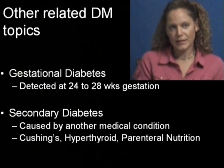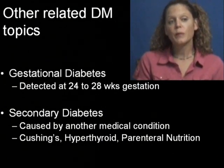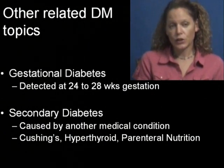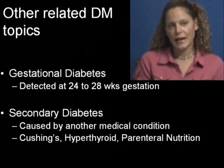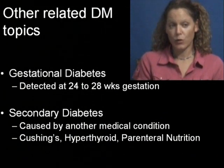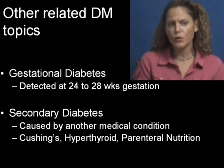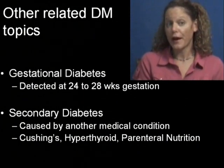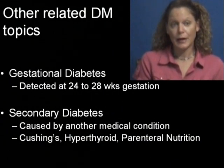Other topics related to diabetes mellitus that we will not discuss in detail here, but that you may want to research on your own, include gestational diabetes. This is diabetes that occurs during pregnancy, and it is usually detected at 24 to 28 weeks gestation. Secondary diabetes is caused by another medical condition — for example, Cushing's disease or hyperthyroidism can also cause high blood sugars and diabetes.